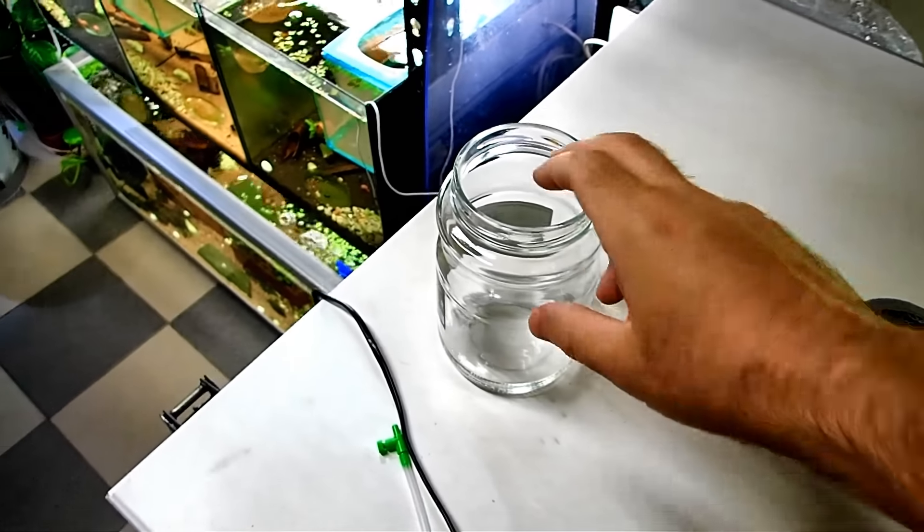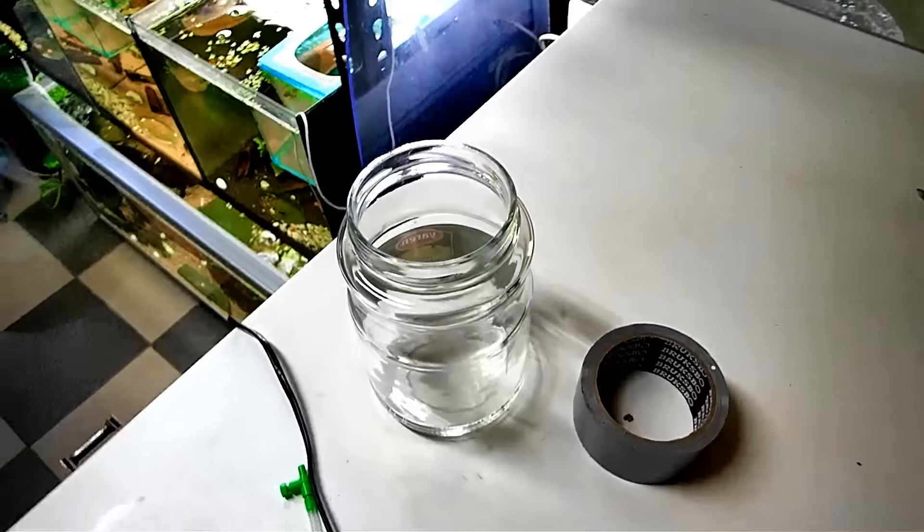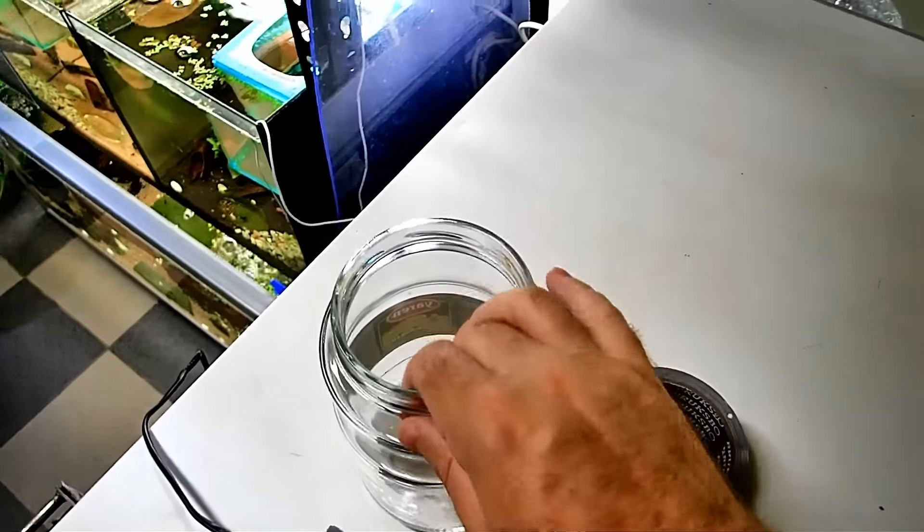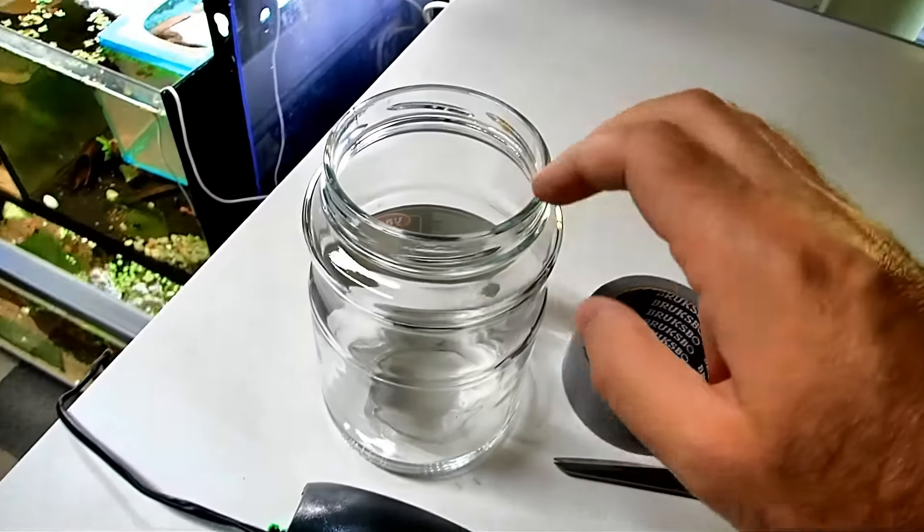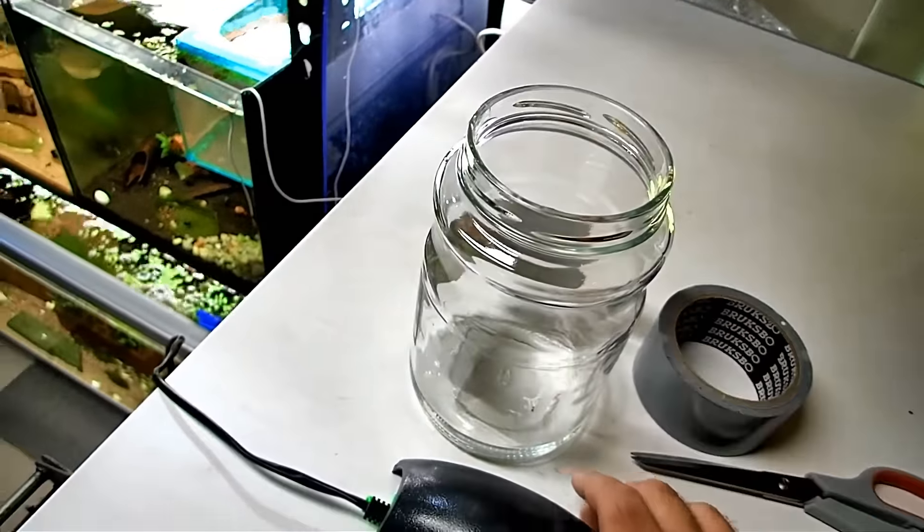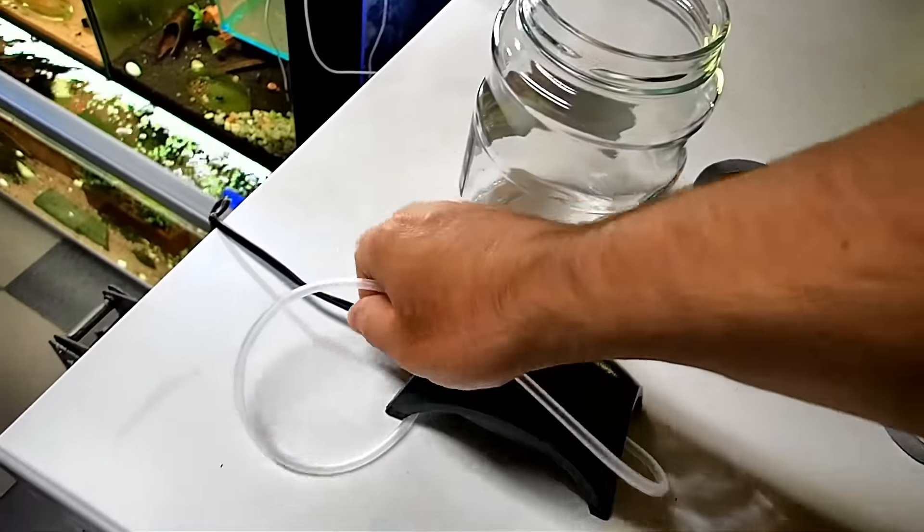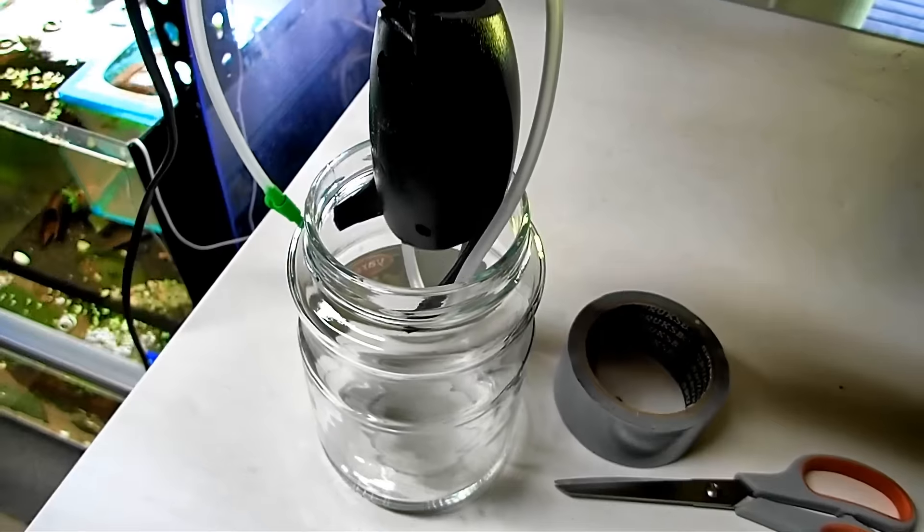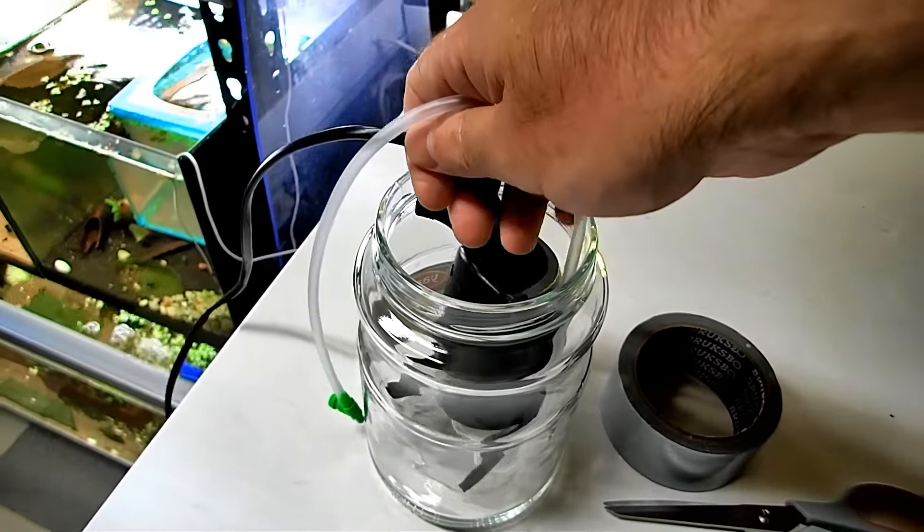What you're gonna need is some duct tape, you're gonna need a pair of scissors, you're gonna need your pump obviously, and you're gonna need a jar or a vessel where the lid is wider than the pump itself. So let me just hold this up for you so you can see. And we want the pump to go into the jar like this, you see?